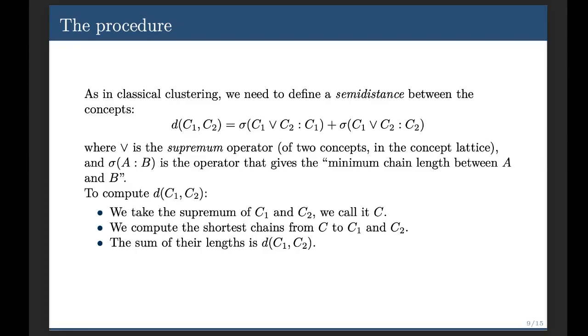The sum of the lengths of these two shortest chains is what we call this distance or this semidistance, because it's not a distance, because it does not satisfy the triangle inequality.